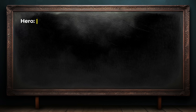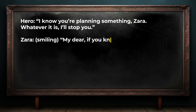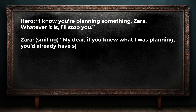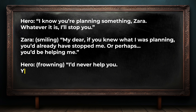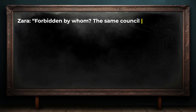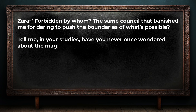Let's look at how this might play out in a conversation between Zahra and the hero. Hero: 'I know you're planning something, Zahra. Whatever it is, I'll stop you.' Zahra: 'My dear, if you knew what I was planning, you'd already have stopped me. Or perhaps, you'd be helping me.' Hero: 'I'd never help you. Your magic is dangerous and forbidden.' Zahra: 'Forbidden by whom? The same council that banished me for daring to push the boundaries of what's possible? Tell me, in your studies, have you never once wondered about the magic that lies just beyond your reach?'